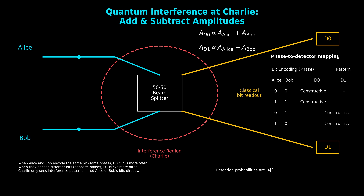This is a key insight for MDI-QKD. In summary: if Alice and Bob choose the same bit, D0 tends to click. If they choose different bits, D1 tends to click. Charlie cannot tell what Alice's bit was, and he cannot tell what Bob's bit was, but he can see whether they matched or differed — and that's exactly the only information the protocol needs.